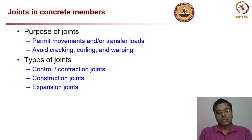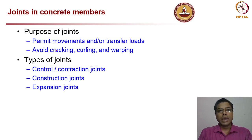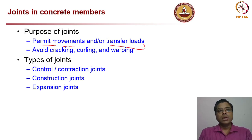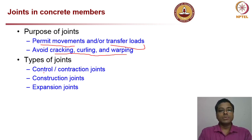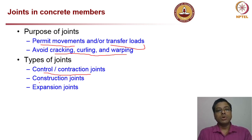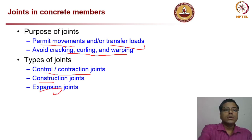The main purpose of joints in concrete members is to prevent movement and/or transfer loads, while also trying to avoid cracking, curling, and warping. However, some types of joints are provided not to avoid cracking but to control cracking — those are called contraction or control joints. The other two major types are construction joints and expansion joints.